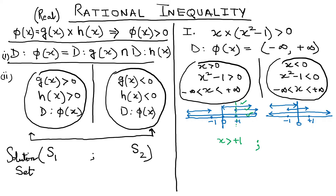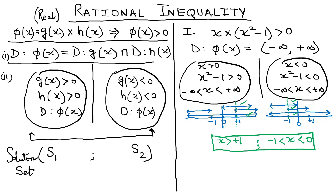The common region from Case 2 is the portion where x lies between −1 and 0. So the final answer is x > 1 union (−1 < x < 0). Now let us check the final answer by substituting some values to verify whether it is correct.